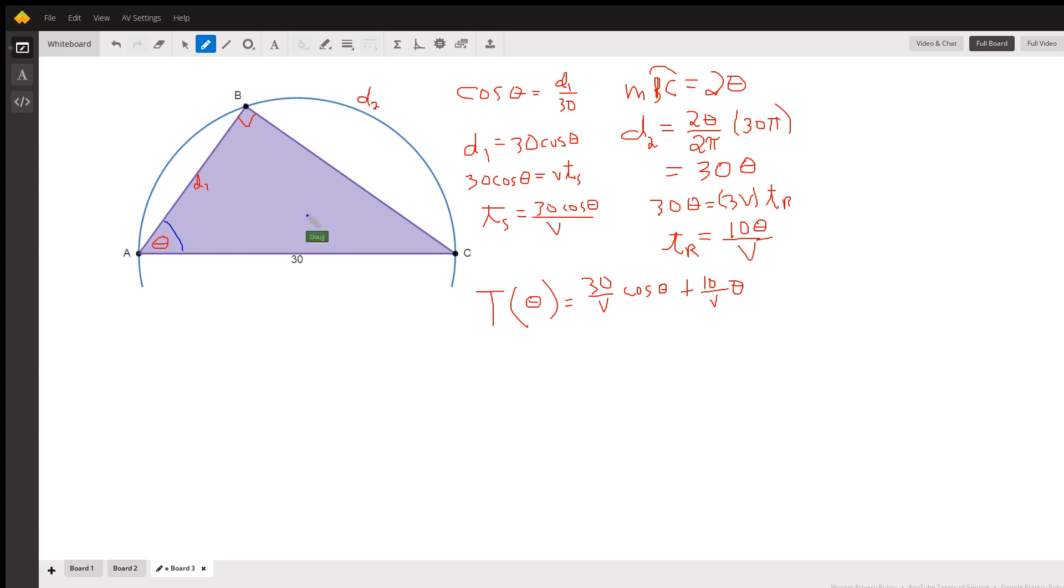In this right triangle, the cosine of theta is d sub 1 over 30, adjacent over hypotenuse. So d sub 1 is 30 cosine of theta. That distance is equal to rate times time, so the time for him to swim to point B is 30 cosine of theta divided by v.